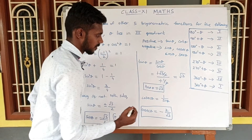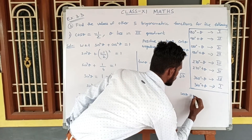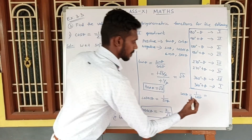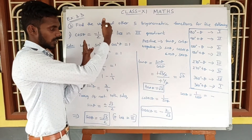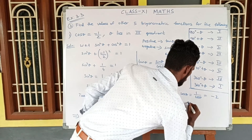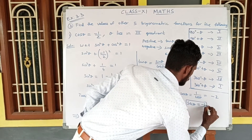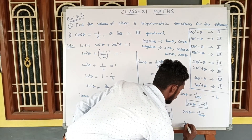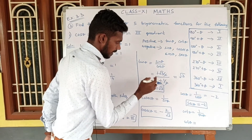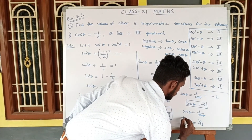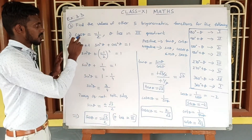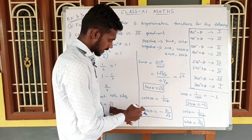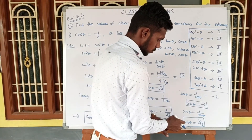Secant θ is nothing but 1 by cos θ. Cos θ = −1/2, so secant θ = −2. Then cot θ is 1 by tan θ = 1 by root 3. So the remaining values are: sin θ = −√3/2, tan θ = √3, cosecant θ = −2/√3, secant θ = −2, cot θ = 1/√3.